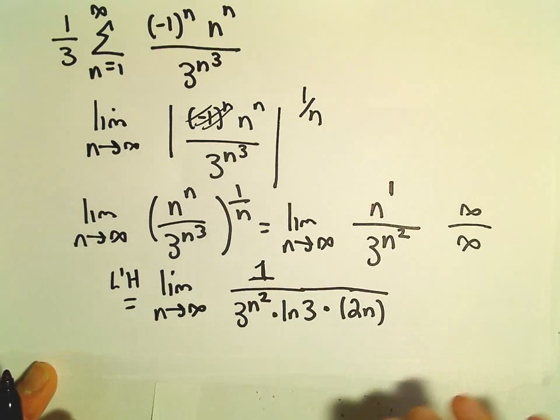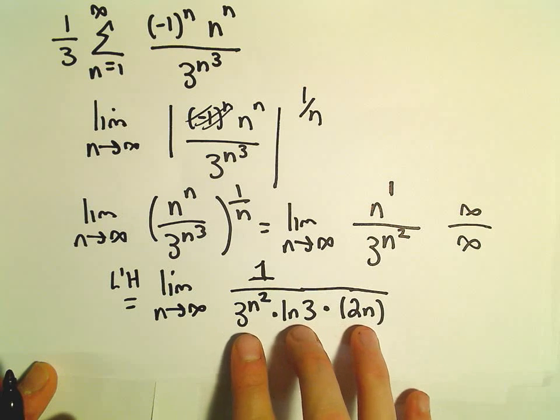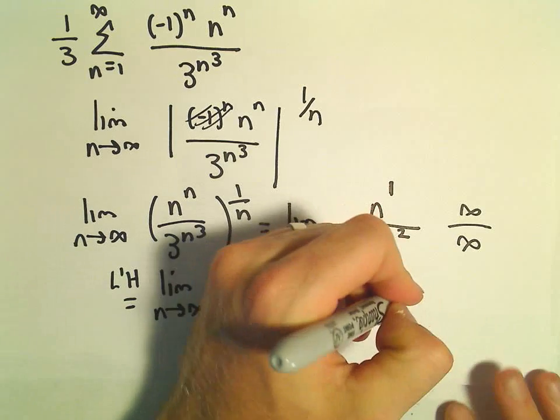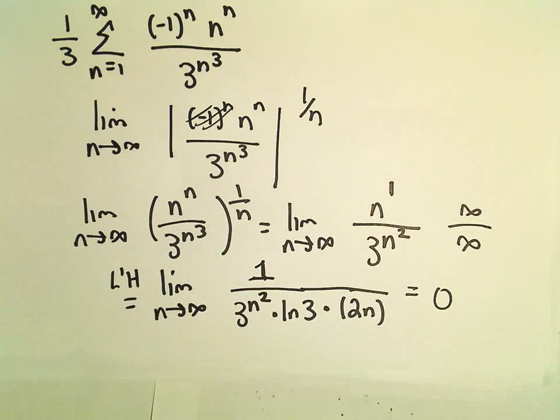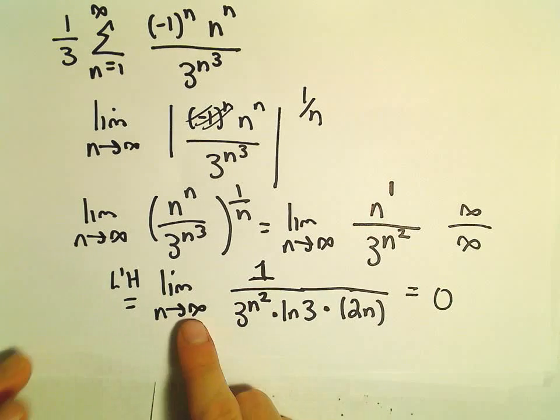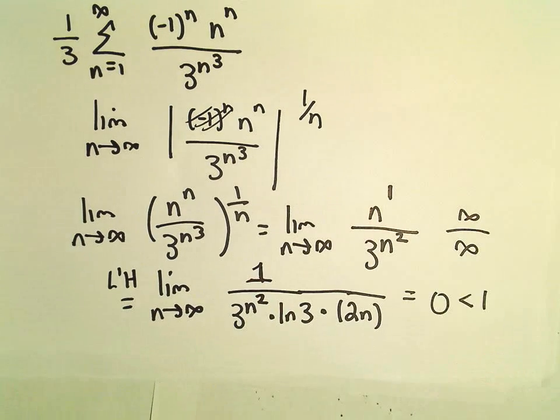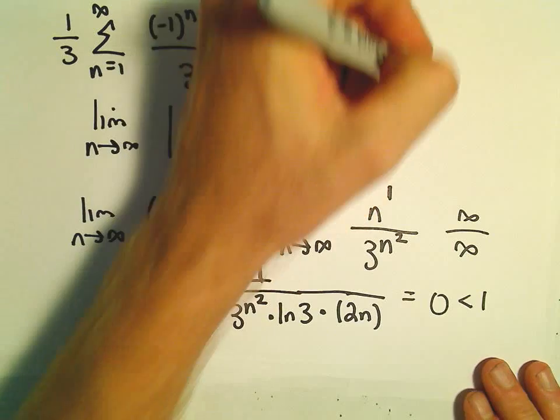Well, now as n goes to infinity, the denominator is definitely going to infinity. The numerator is just 1, so this limit's going to equal 0. So now we've justified that our limit's 0. Well, that's certainly less than 1, and that would tell us that our series converges.